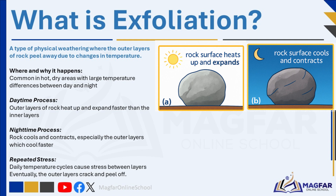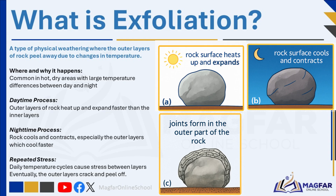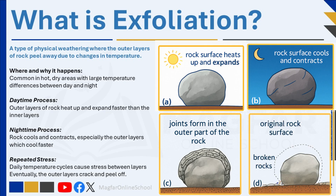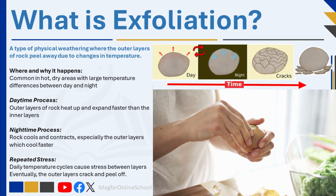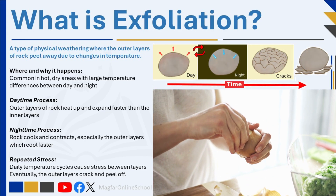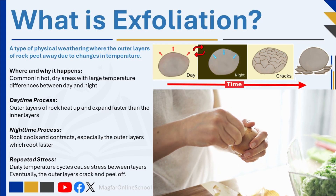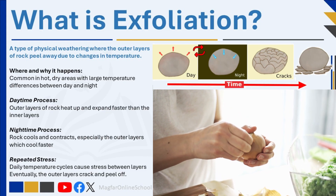At night, as temperatures drop, the outer layers cool and contract faster than the inner layers. This continuous cycle of uneven expansion and contraction creates stress within the rock. Over time, the outer layers crack and peel away, similar to the layers of an onion — hence the name onion weathering. Exfoliation occurs without chemical change in the rock, making it a mechanical process.